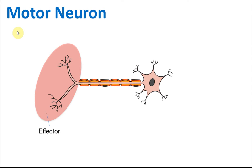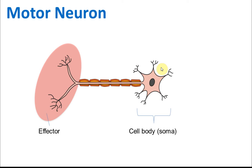Let's start with the motor neuron. These branches here are connected to the effector — always remember that the motor neuron is connected to the effector, usually a muscle or gland. It has a cell body, sometimes called a soma, and inside the cell body is the nucleus, which is the control center controlling all activities of the neuron. It also has the myelin sheath, which speeds up impulse transmission.